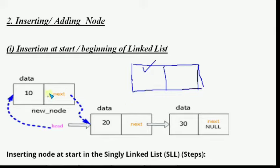Suppose this is the first node we created — then its address must be stored in start. The value of start is null at the beginning, meaning no address is stored when the linked list is empty. So when we create a node and it is the first node, we do: start = nptr.